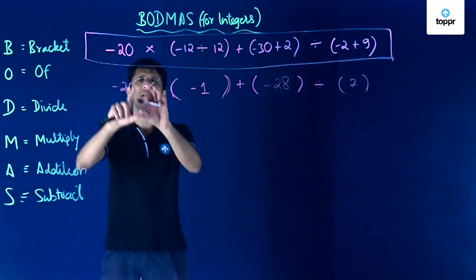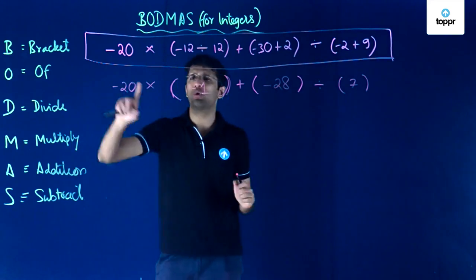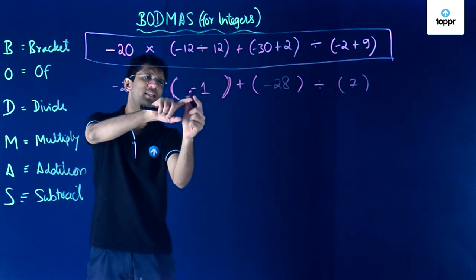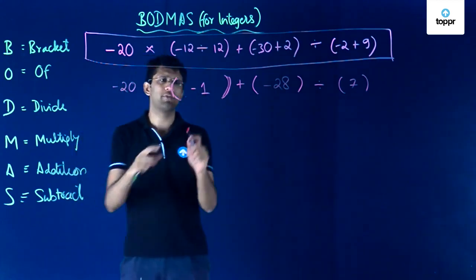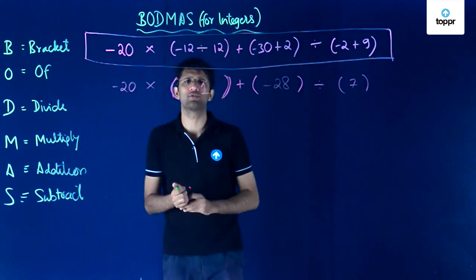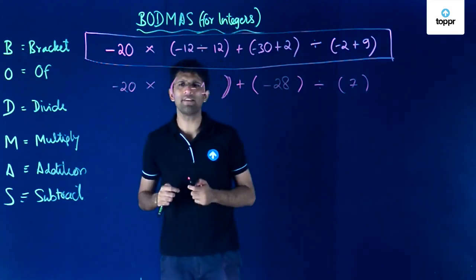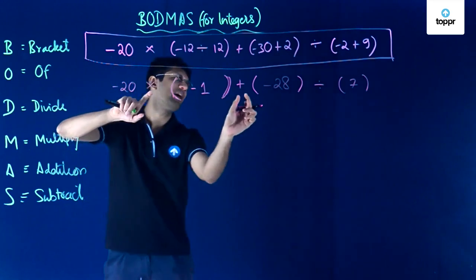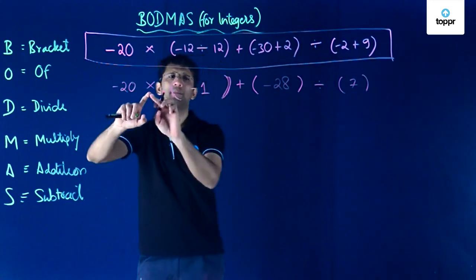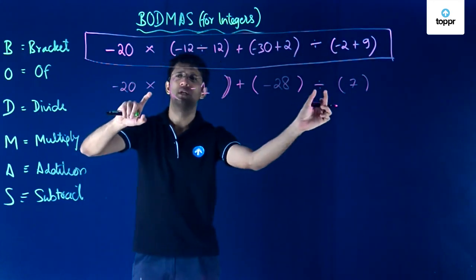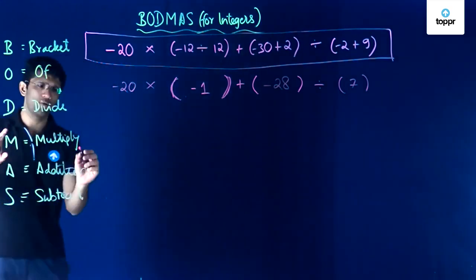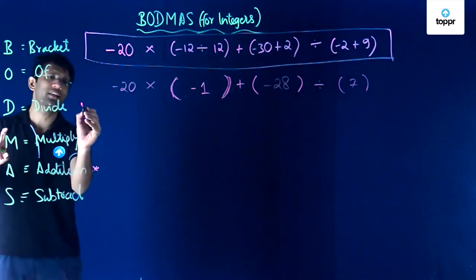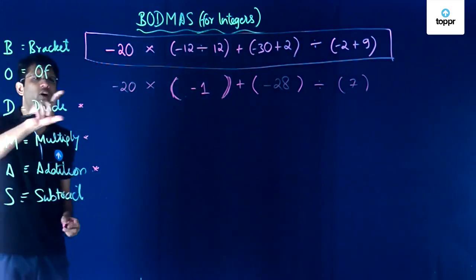Now we apply BODMAS to this simplified expression. The bracket has already been resolved to minus 1, so we need not do anything about it. The remaining operators are multiply, add, and divide. Looking at BODMAS order, division comes before multiplication and addition, so we will perform division first.